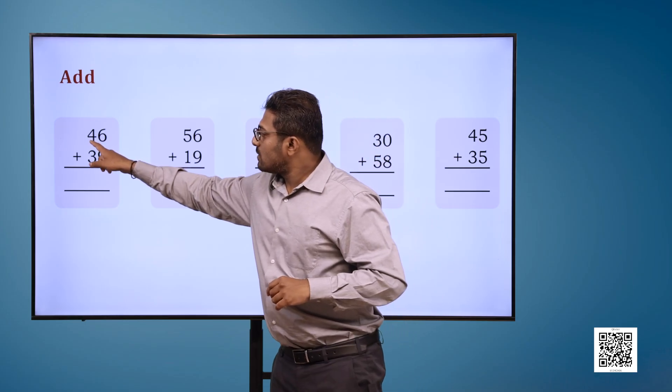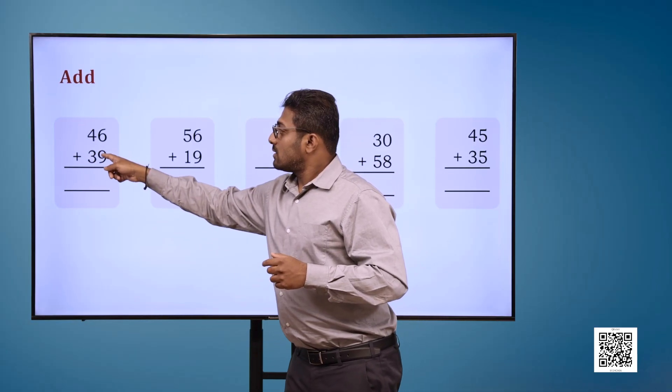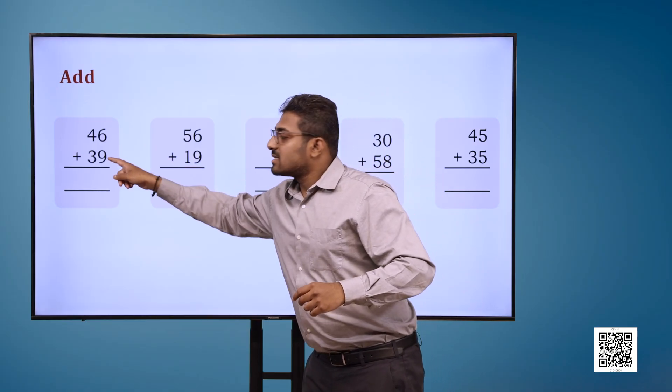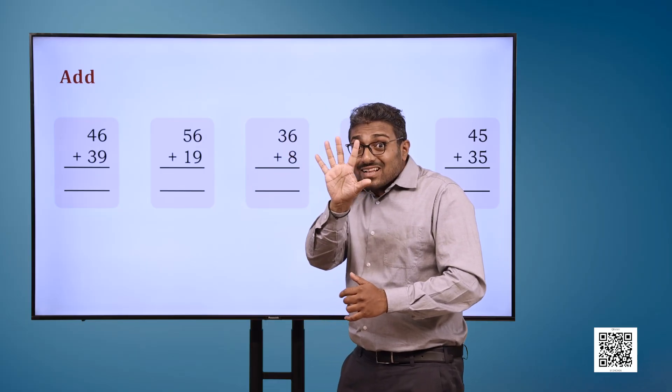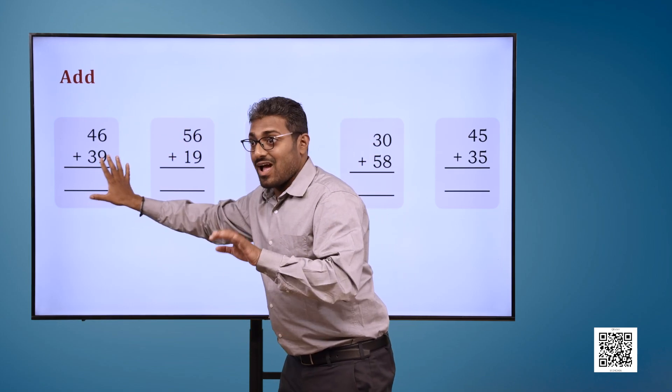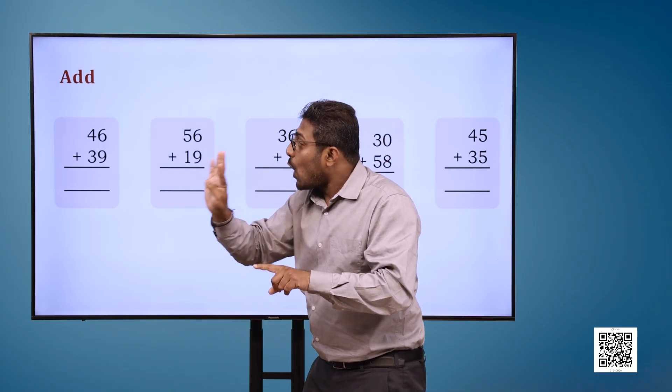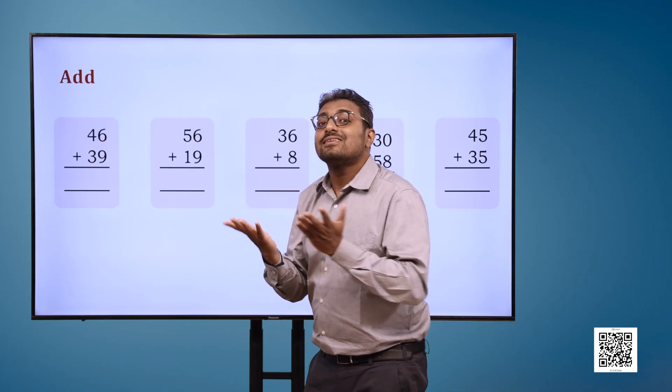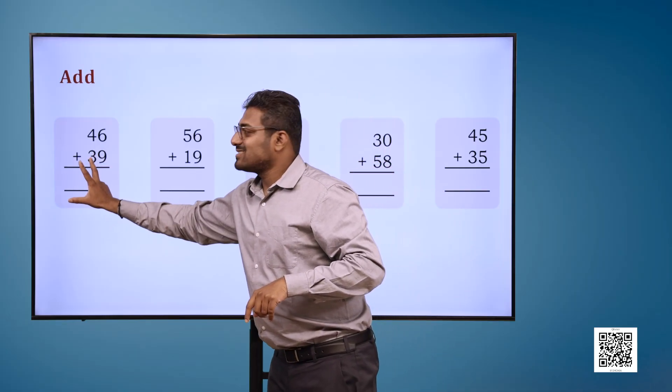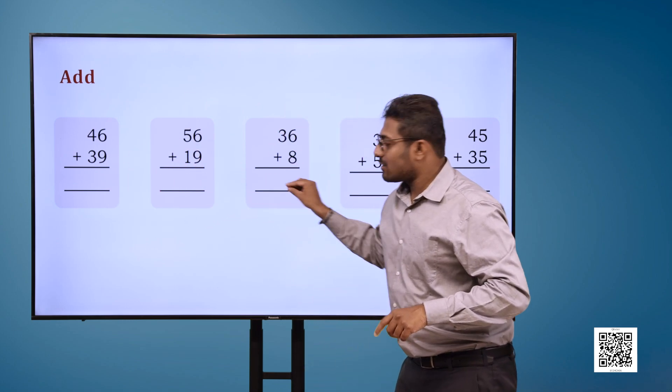Add 46 plus 39 blank. That is, 56 plus 19 blank, 36 plus 8 blank, 30 plus 58 blank, 45 plus 35 blank.